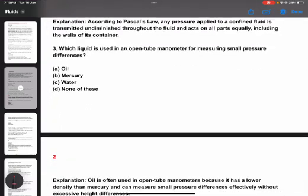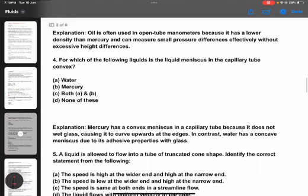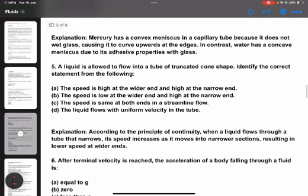Question number four: Which liquid has a meniscus that is convex in a capillary tube? This is a conceptual question. The answer is mercury. Question number five: A liquid flows in a tube of truncated cone shape. Identify the correct statement.